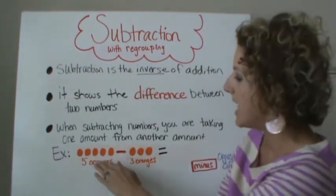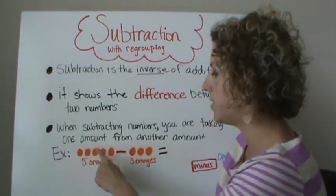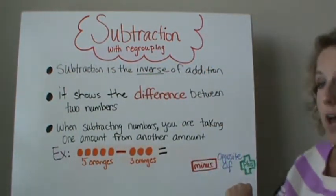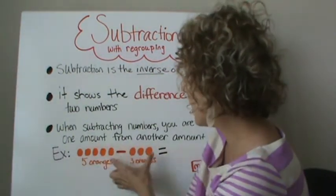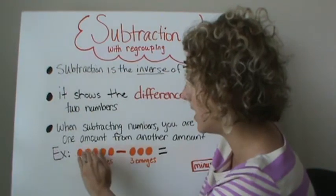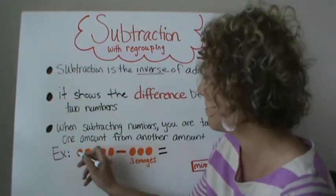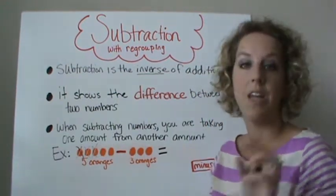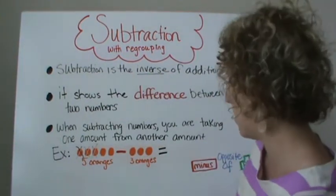Let's look at an example. Let's say we have five oranges minus three oranges. We know that the minus sign is the opposite of the plus sign, so we're not going to put these two together to make eight oranges. Instead, I'm going to subtract three, because I have five to start with and I'm going to eat three oranges — maybe me and my sister and my brother. We're going to eat three oranges. So if you have five oranges minus three oranges, you're left with two oranges.